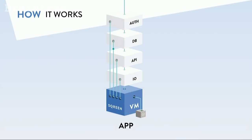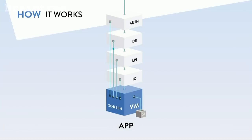Did you see exactly what happened in the demo? When the attack arrived in the application, it went through the different layers of execution. When it reached the database layer, Screen detected that the attack tried to modify the structure of a SQL query — the exact blueprint of a SQL injection. Screen blocked it and reported it.